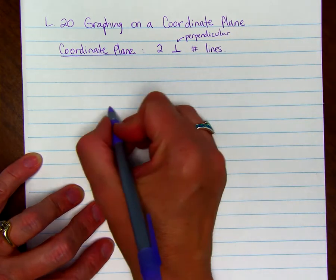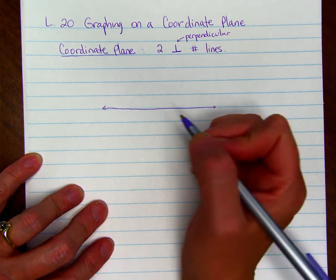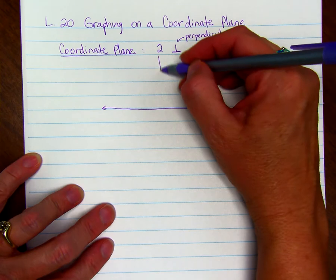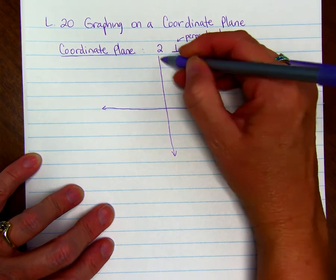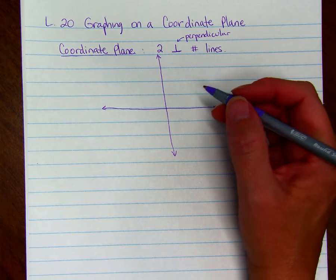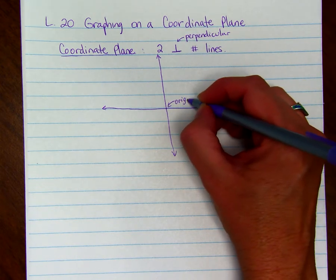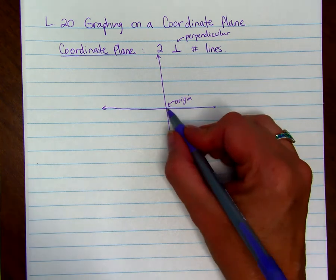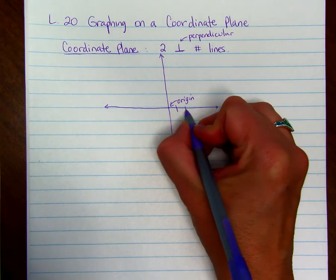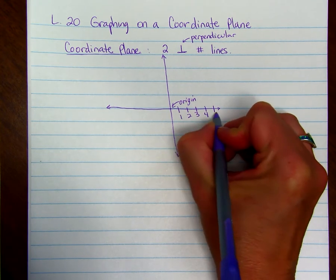So we're going to take a number line, here it is. And we're going to draw another line that's perpendicular to it, right through the center which is called zero. So sometimes we call this the origin. On a number line to the right of zero we have one, two, three, four, five and so on. That's what the arrow is for.